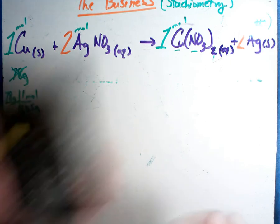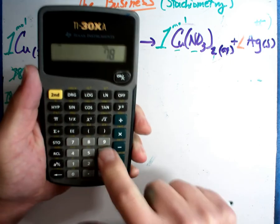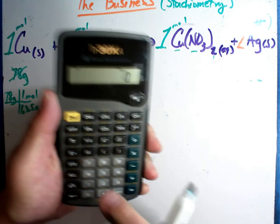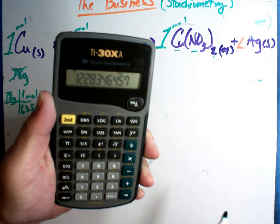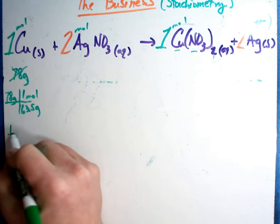So I'm going to take 78 divided by 63.5. I did it wrong, I'm sorry, 78 divided by 63.5 is 1.23, 1.23 moles.